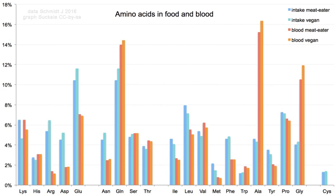The 20 amino acids that are encoded directly by the codons of the Universal Genetic Code are called standard or canonical amino acids. A modified form of methionine is often incorporated in place of methionine as the initial amino acid of proteins in bacteria, mitochondria, and chloroplasts. Other amino acids are called non-standard or non-canonical. Most non-standard amino acids are also non-proteinogenic, but two of them are proteinogenic, as they can be incorporated translationally into proteins by exploiting information not encoded in the Universal Genetic Code. The two non-standard proteinogenic amino acids are selenocysteine and pyrrolysine.